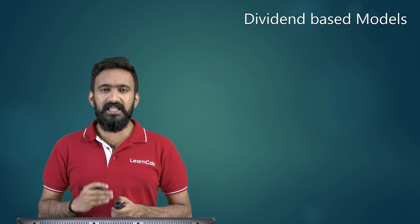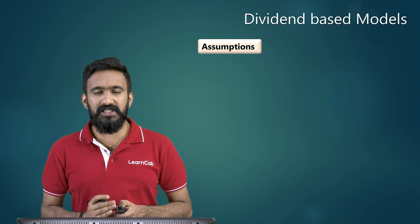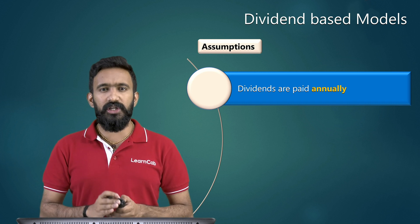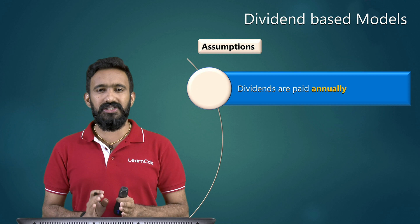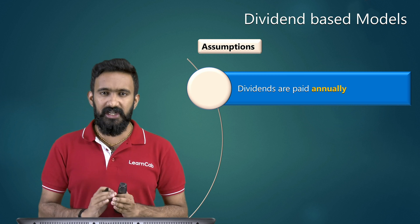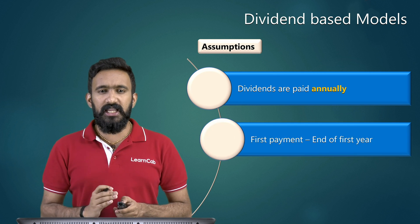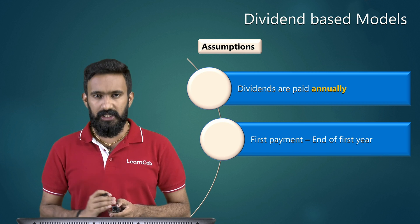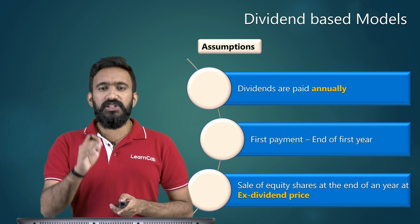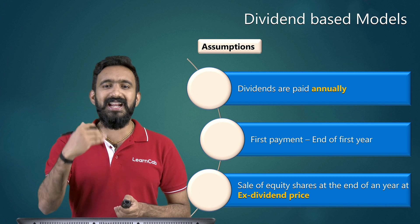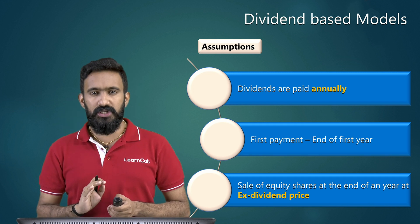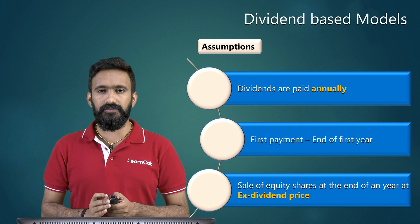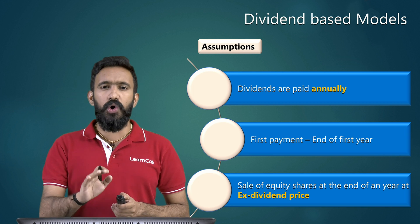The dividend-based model has a lot of assumptions attached to it. First, dividends are paid annually — so in all the questions we solve, we will consider annual dividends. Second, the first payment is happening at the end of the year. Third, the sale of the equity share is also happening at the end of the year at an ex-dividend price, which means the price we get is not influenced by the dividend — it is after the dividend declaration.